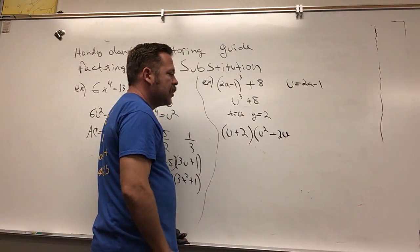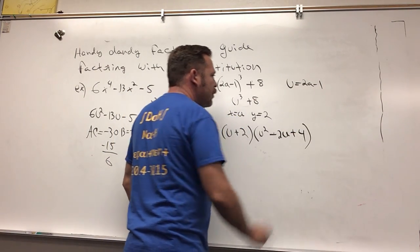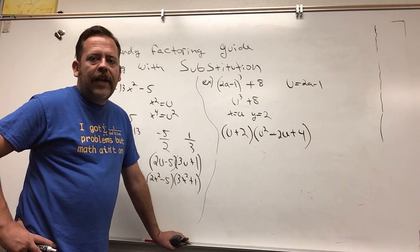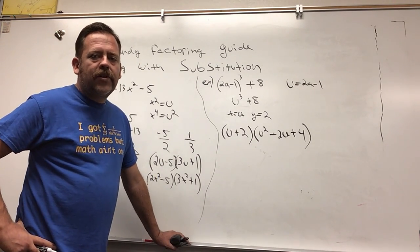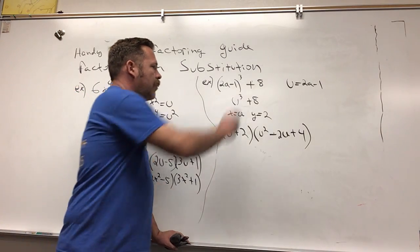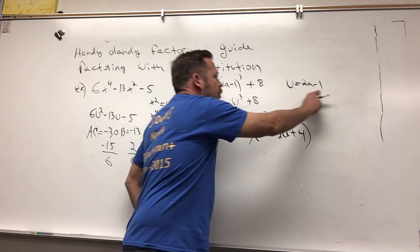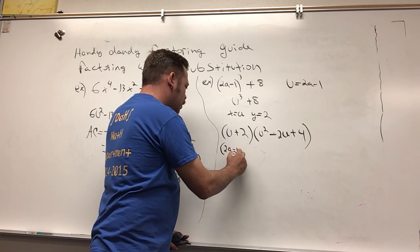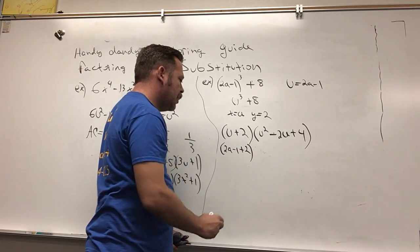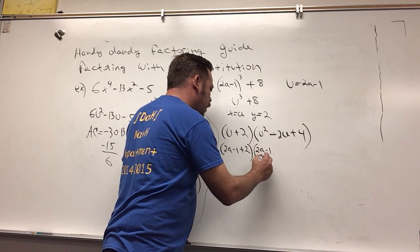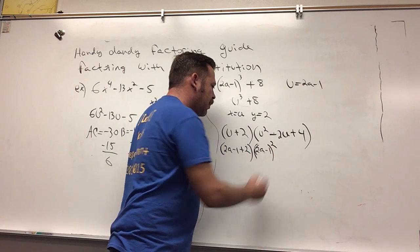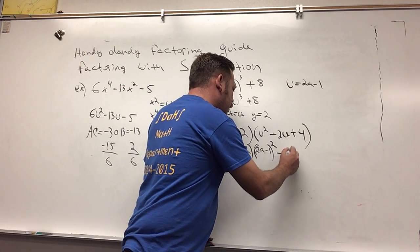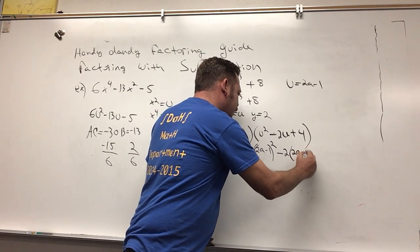Now it's factored, but we need it in terms of a because that's what we started with. We can't leave it in terms of u. So I'm going to plug back in the 2a - 1 for the u. I have (2a - 1) + 2, and then I have (2a - 1)² minus 2(2a - 1) + 4.